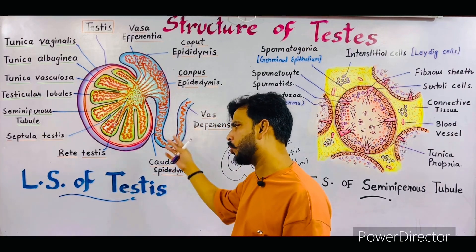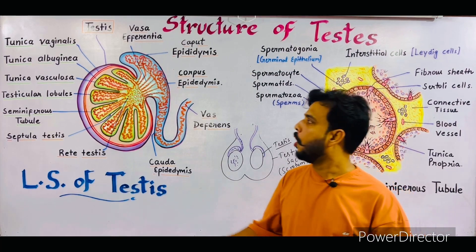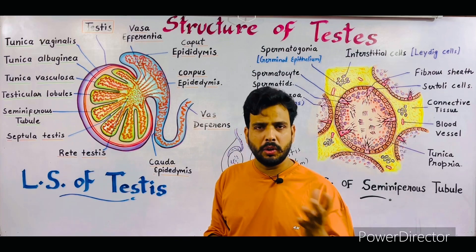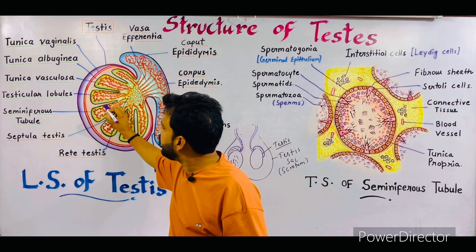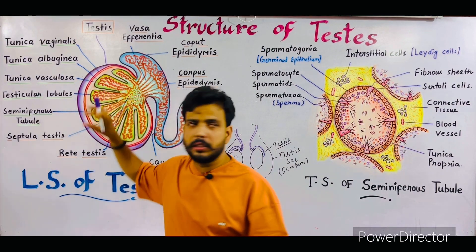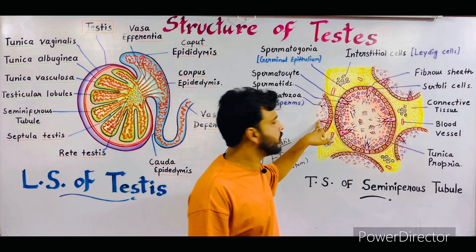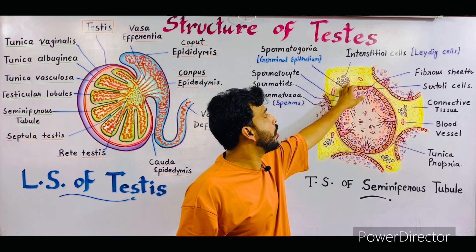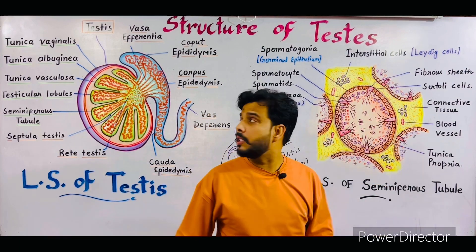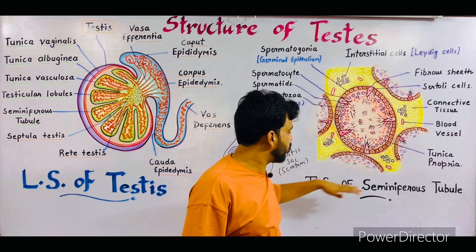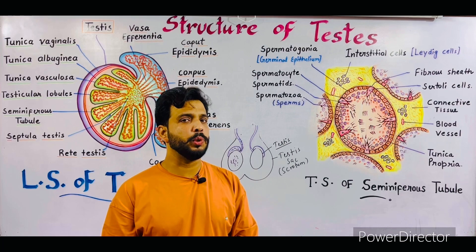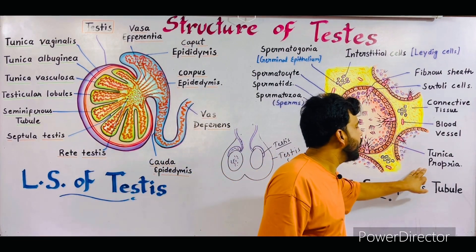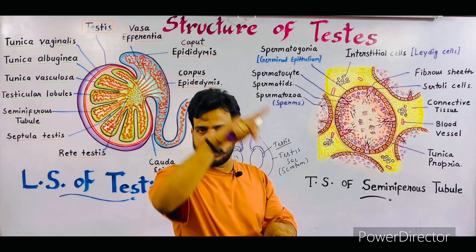Now we will talk about the histology — the detailed structure of the seminiferous tubule. Between the seminiferous tubules there is a vacant space called the interstitial space. As we cut the seminiferous tubule in section, this type of diagram can be seen under the microscope — these are the seminiferous tubules in cross-section, and the yellow colored area is the interstitial space present between them. The outer margins of the seminiferous tubule — the outermost layer — is termed as Tunica propria, which forms the circular margins of the seminiferous tubule.